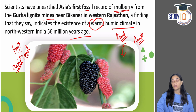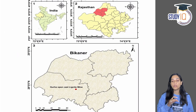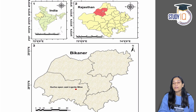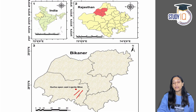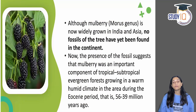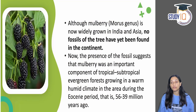This is a map of India — you can see Rajasthan, the Bikaner area, and specifically the Gurha Open Cast Lignite Mine in this area where the fossil was found.